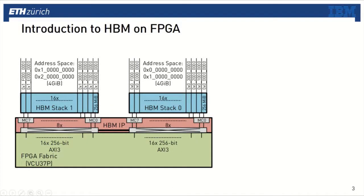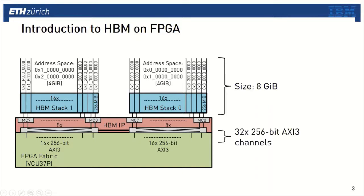FPGA vendors are of course aware of this issue. To close the gap to CPU or GPU main memory bandwidth, they introduced FPGAs with HBM technology in recent years. I want to briefly introduce the HBM on our target FPGA, which is a Xilinx VCU 37P device. The total size of the HBM is 8 GB. To access the HBM from the FPGA fabric, we instantiate an IP that exposes in total 33 AXI3 buses, each 256-bit wide.